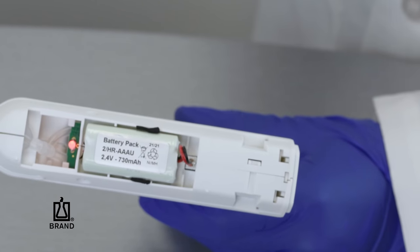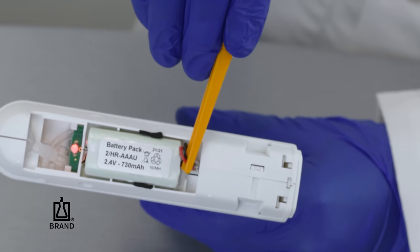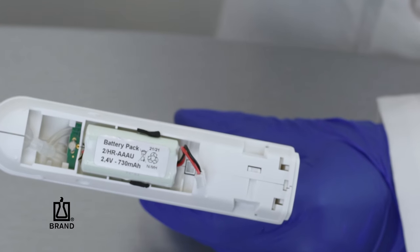If you need to remove the battery, simply unplug it from the AccuJet S by tugging gently on the connector.